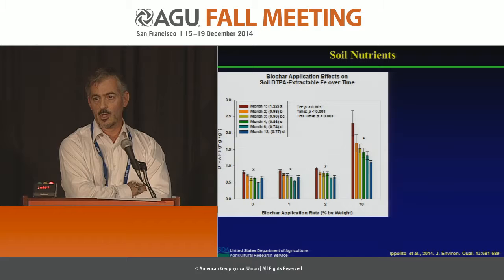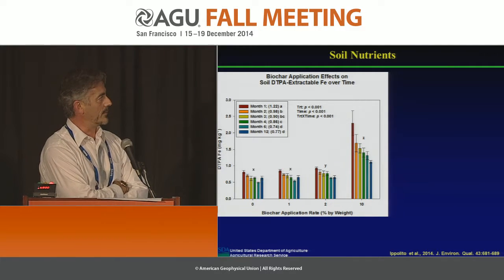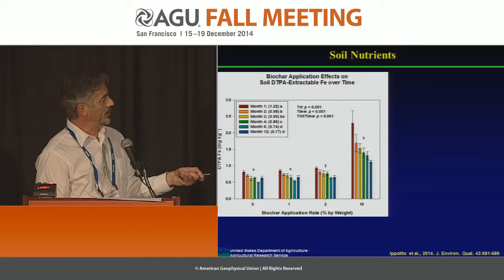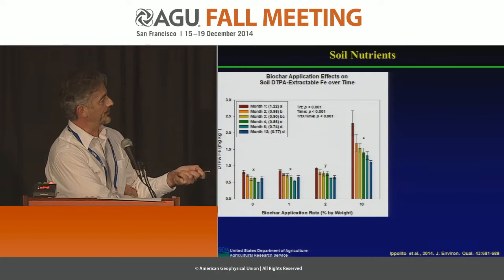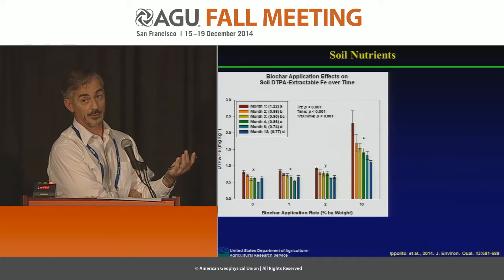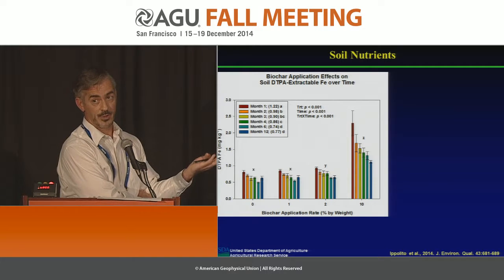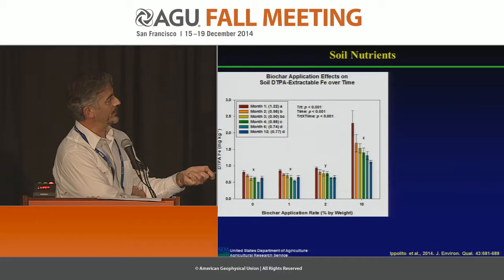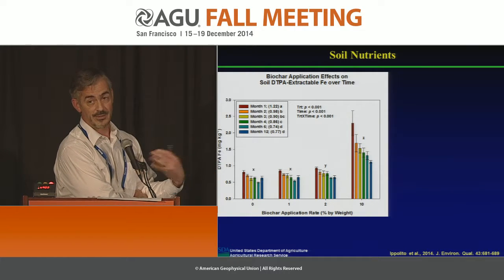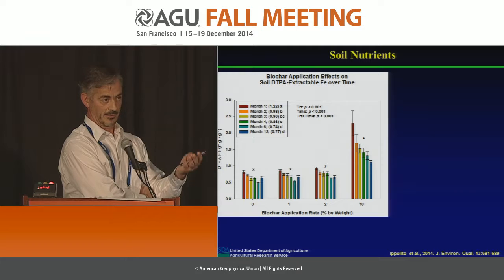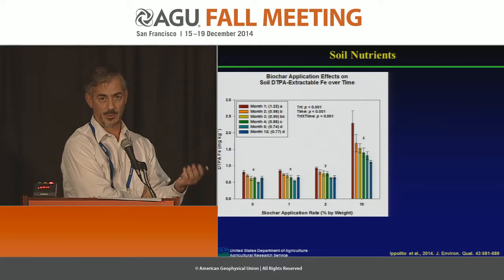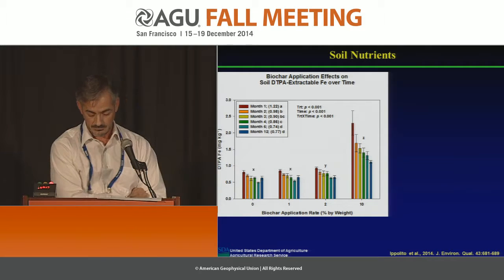We've also done some work with micronutrient availability with biochar applications. This is a study performed over 12 months with a hardwood biochar applied at 0, 1, 2, or 10% by weight. On the y-axis is essentially available iron. As we increase biochar application rate, we see a nice increase in available iron content. This is a western U.S. soil, and over time we see that micronutrient availability decreases — which is not uncommon. We see this when we add fertilizers: you have high availability initially, then it reduces as available nutrients form solid mineral precipitates in the soil.